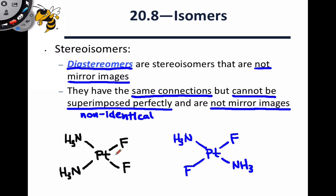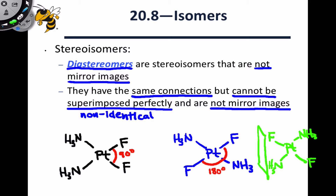If we focus on the angle between the two platinum-fluorine bonds, in the black structure we have a 90-degree angle, whereas in the blue structure we have a 180-degree angle. These two structures are not mirror images of one another. If we reflect the black structure through an imaginary mirror, in the mirror image the angle between the two Pt-F bonds is still 180 degrees, so the reflection does not convert the 90-degree structure into the 180-degree structure. The black and blue structures are therefore not related as mirror images.